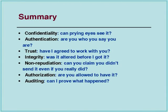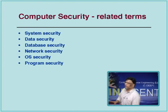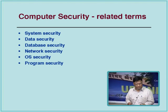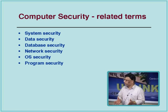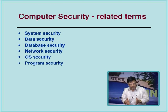This is a summary of the different security terms: confidentiality, authentication, trust, integrity, non-repudiation, authorization, and auditing. Related terms include network security, system security, data security, database security, operating system security, and program security. The term system security is sometimes preferred as it encompasses all of these.